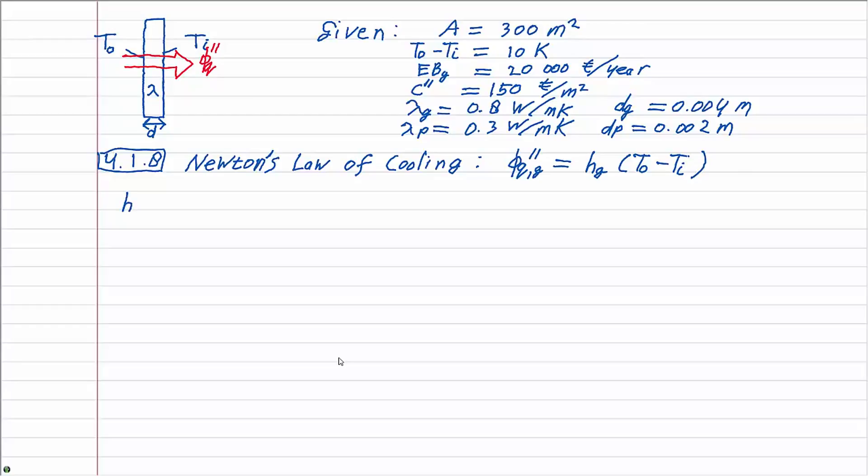The heat transfer coefficient h can be calculated as the Nusselt number times the conductivity divided by the thickness of the window. For conduction through a plate the Nusselt number equals 1 and the other parameters are given, so the heat flux can be calculated pretty straightforwardly as 2000 joules per square meter second.